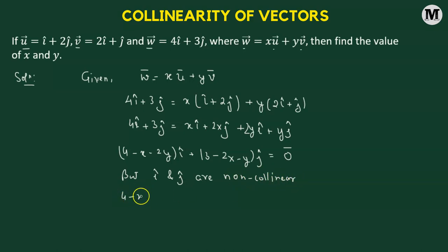If they're non-collinear, this simply means that the coefficient of i cap, that means 4 minus x minus 2y, must be equals to 0. And coefficient of j cap, which is 3 minus 2x minus y, must be equals to 0 as well.